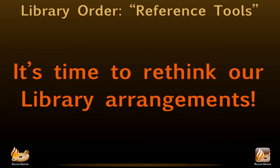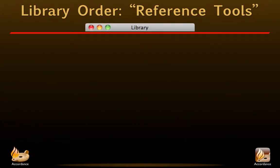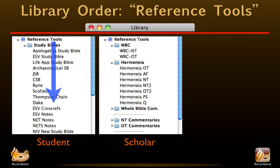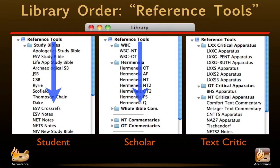It's time to rethink our library arrangements. This seemingly small change has huge implications for power users, no matter what the level of their Bible study expertise. Students of the Bible know that study Bibles are notoriously spotty in which verses they offer notes — now Accordance can search your top 10 study Bibles for a note on a particular verse. Scholars used to accessing technical commentaries will know that many come in separate modules in Accordance. That's why we used to recommend placing a whole Bible commentary at the top. Now we can place any of our favorites there, confident that Accordance will sort through all of them. Even text critics can benefit, as Accordance will search through multiple apparatuses to find the first note on a specific verse.